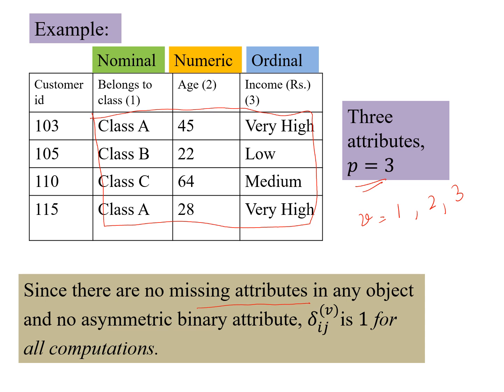So delta ij would be, and we do not have any binary asymmetric attribute also. So delta ij is one for all the computations. So this particular example, where we have one nominal attribute, one numeric, and one ordinal, and no missing values in any data point.